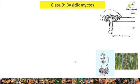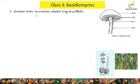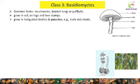Now let's study Class 3 — Basidiomycetes. Common forms of Basidiomycetes are mushrooms, also known as bracket fungi or puffballs. Basidiomycetes grow on soil, on logs, as well as tree stumps. Some members of Basidiomycetes also grow on living plant bodies as parasites, causing diseases such as rusts and smuts to crops.